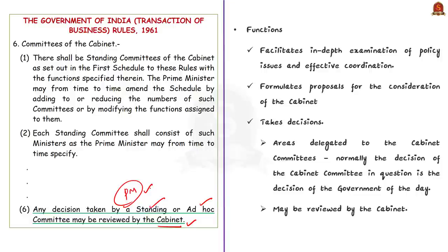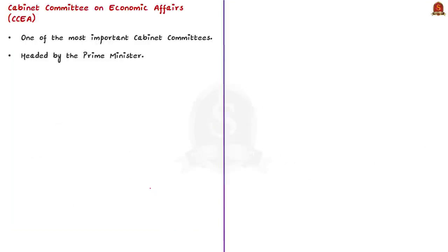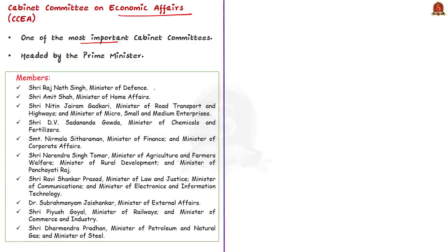Our focus today is the Cabinet Committee on Economic Affairs, which is one of the eight Cabinet Committees. It is one of the most important Cabinet Committees and is headed by the Prime Minister. Its members include the Ministers of Defence, Home Affairs, Finance, and others. This Cabinet Committee on Economic Affairs has many functions listed in the schedule of the 1961 rules, including reviewing on a continuous basis matters such as economic trends and integrated economic policy framework for India.